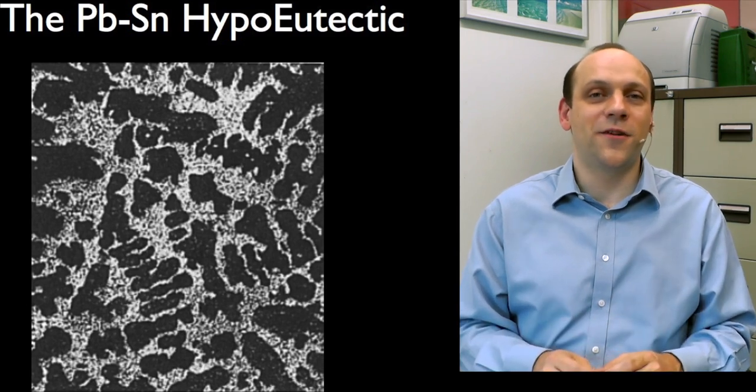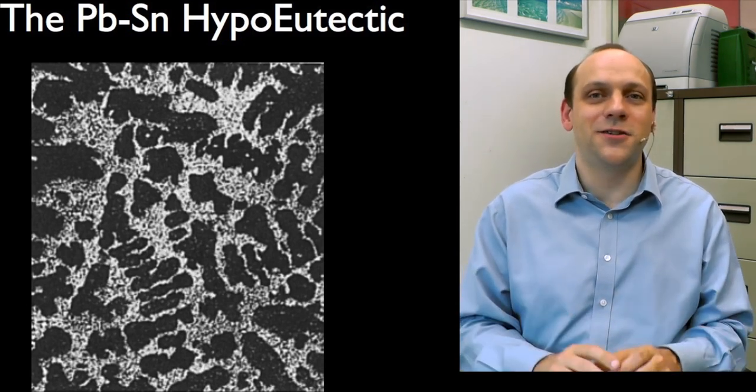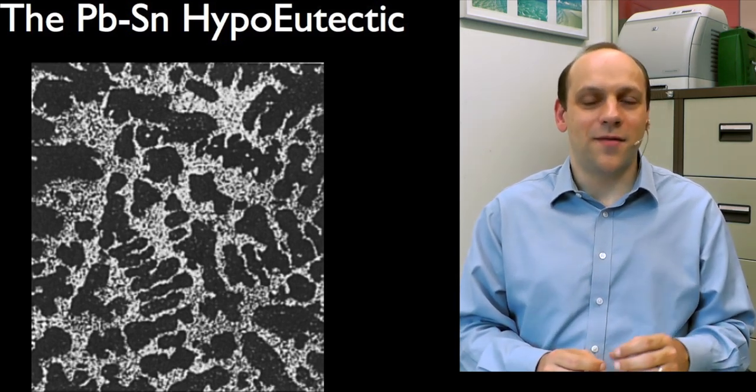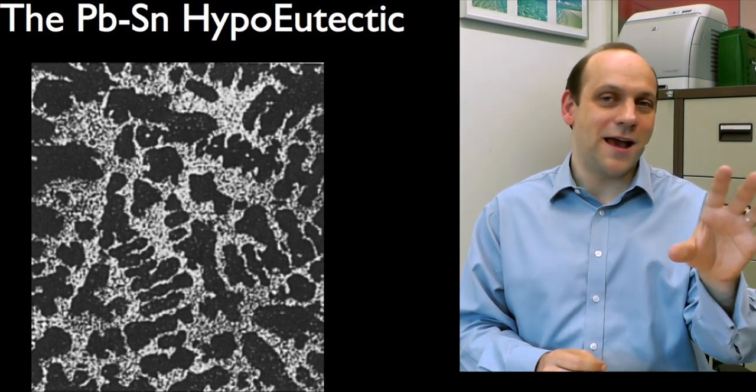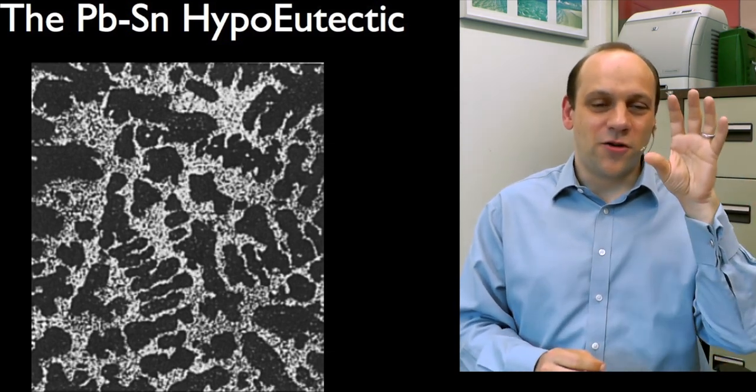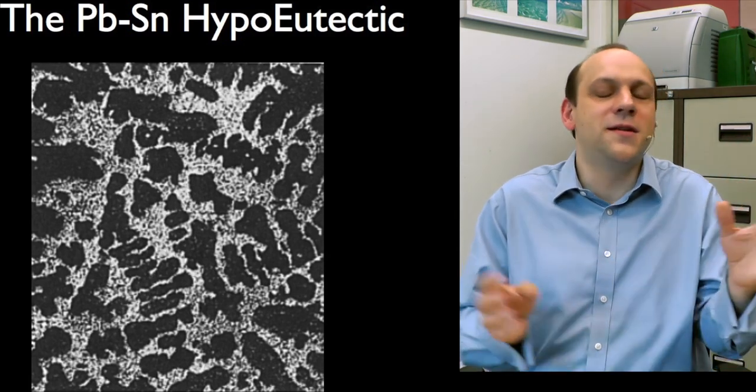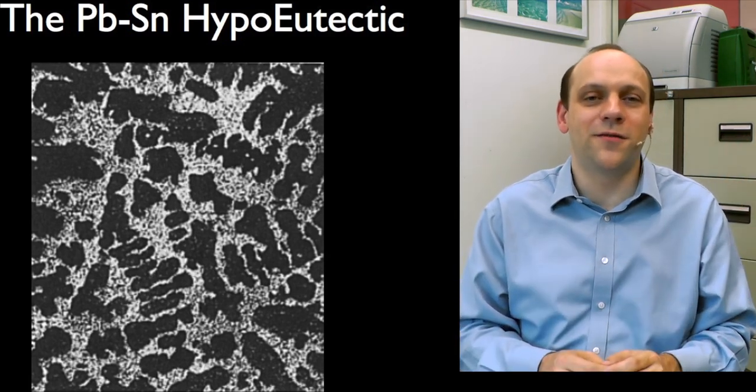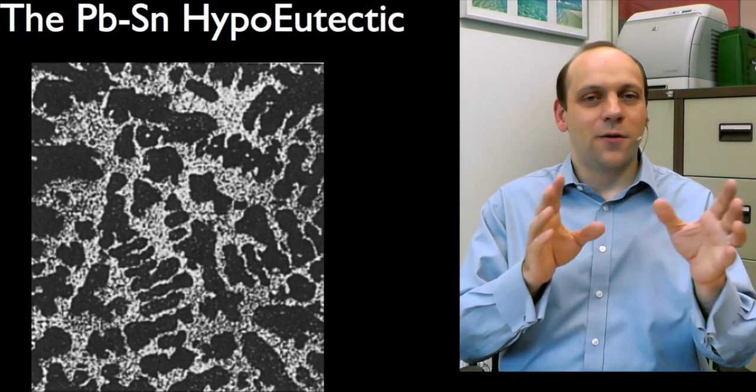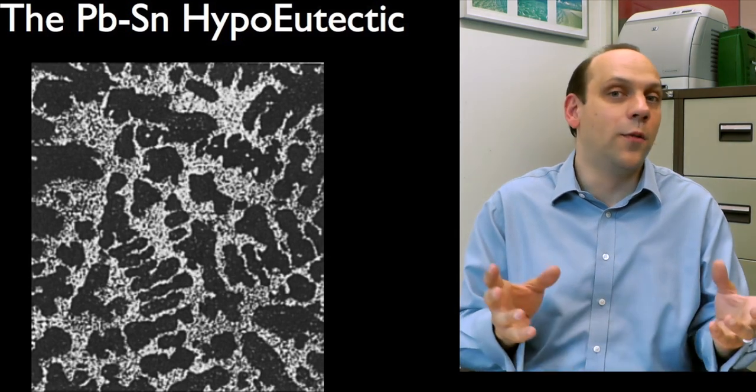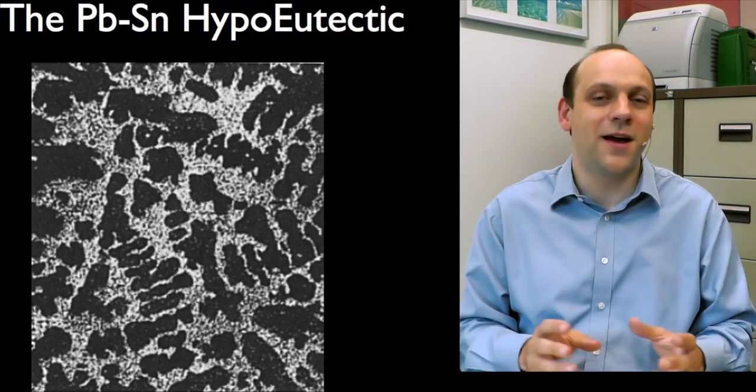If you look at iron-carbon, the iron-carbon phase diagram immediately breaks that convention. And it's the most common material used in the world. Most common metallic material, at least. And there we have iron as the primary one on the left, because usually the dominant element that we're interested in the phase diagram we have on the left. So immediately I can think of an example where we break the convention.